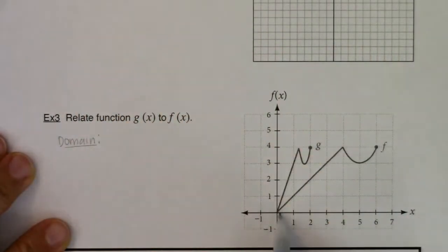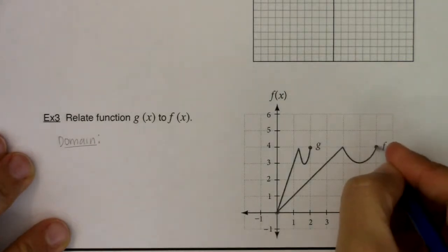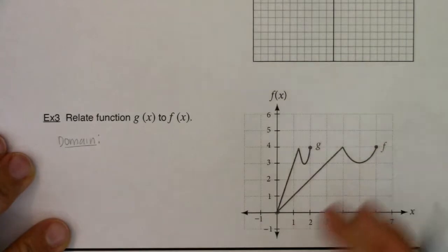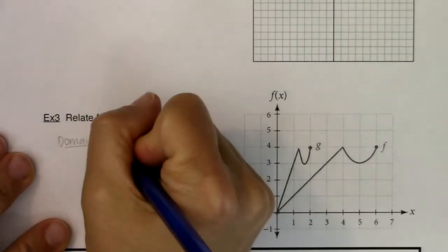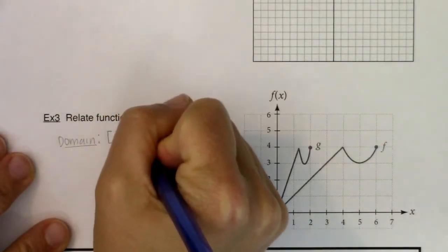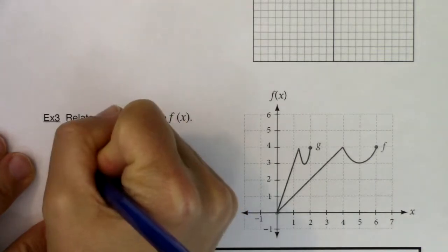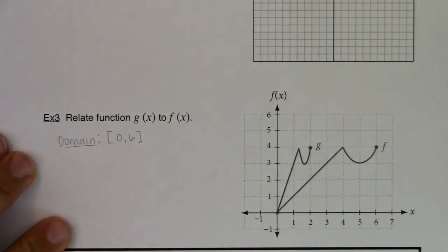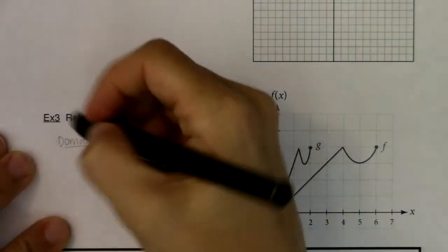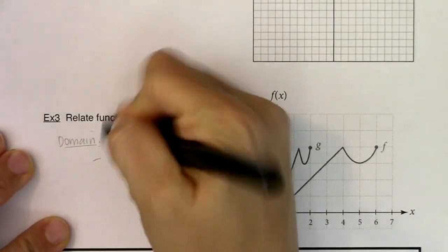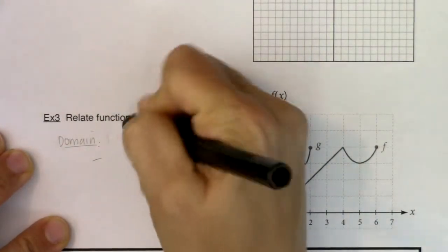The domain of f, if I look left to right along the x-axis, you can see I start here at (0, 0). That's my leftmost point. I end here at (6, 4). That's my rightmost point. But I only care about the x-axis, so I'm going from 0 to 6. This is the domain of f, because we do have two functions we're keeping track of.